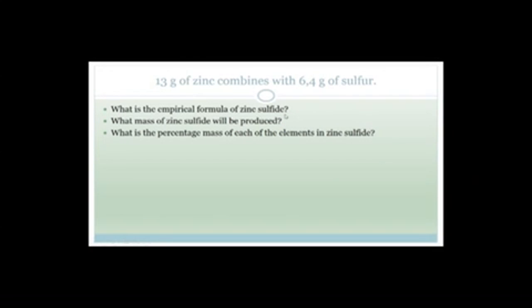The molar mass of magnesium chloride: the molar mass of magnesium is 24 plus two times the molar mass of chlorine, because it's MgCl₂. If you check your periodic table, which I tell you to keep with you all the time, it gives you the molar mass of chlorine.